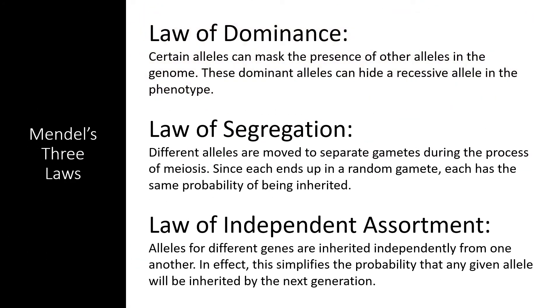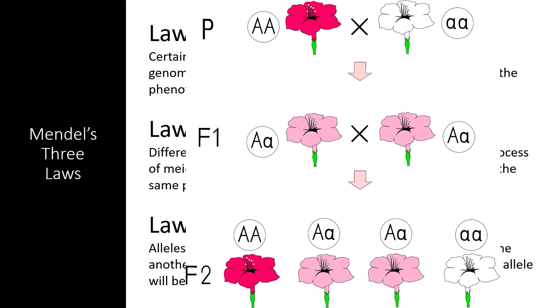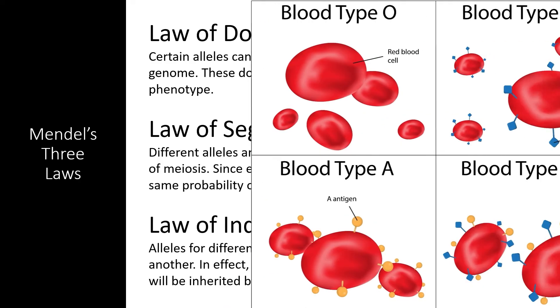However, we have expanded on the Law of Dominance to include more than just complete dominance. Incomplete dominance is where the heterozygote creates a novel phenotype not seen in either homozygous phenotype. Codominance is seen in traits where the heterozygote shows both homozygous traits at the same time, such as the AB blood type that shows both the A phenotype and the B phenotype.